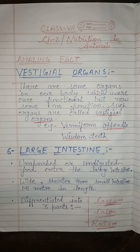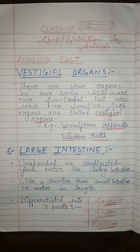Means hamare body mein kuch aise organs hoti hain jinka pehle body mein role raha hoga, but ab aapki body mein unka koi role nahi hai, koi function nahi hai. Aise organs ko hum kehte hain vestigial organs. Example hai aapki body mein vermiform appendix, aur second hai aapka wisdom teeth, yani akal ki jo daad hoti hai.